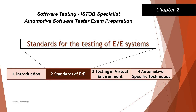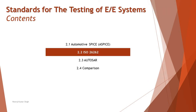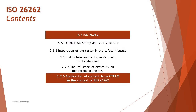Hello friends and greetings for the day. Welcome back to another tutorial on ISTQB Specialist Automotive Software Tester certification. As part of this tutorial, we are still in chapter 2, that is Standards of E&E Systems, looking at topic 2.2 ISO 26262. Under this topic we are looking at the last topic of this segment, that is 2.2.5: Application of Content from CTFL in the Context of ISO 26262.